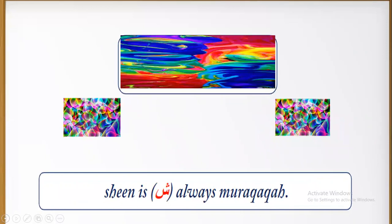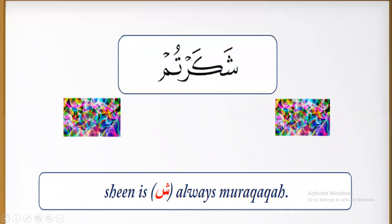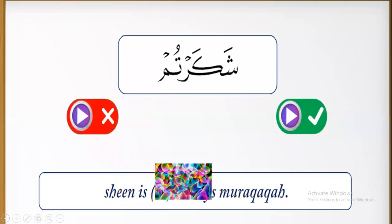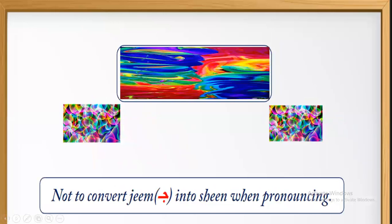Sheen is always muraqaqa. It's sha, sha — not sha with heaviness. Example: the right pronouncing is shakar urtum. The wrong pronouncing is shakar urtum with tafkhim — not shak. Do not convert Jim into Sheen or Sheen into Jim when pronouncing. Example: this word ashams — the right is ashams, the wrong is ajams. Don't pronounce Sheen as Jim. Example: arrozh — it's arrozh, not arrozh with Jim. No tafkhim should be applied to letter Sheen, even when it is followed by a tafkhim letter.